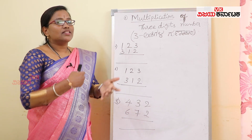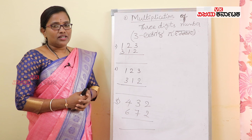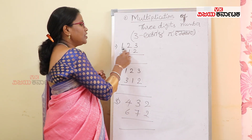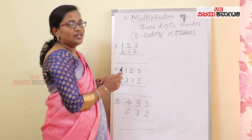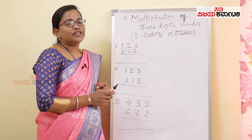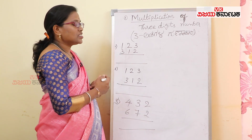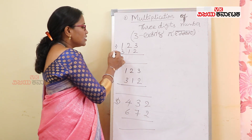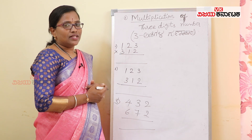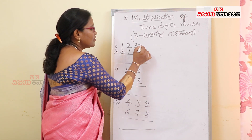We will show you the first problem and the pattern. I have 123 multiplied with 312. We will show you how easy it is to multiply these numbers.